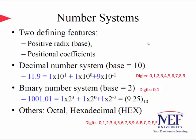If the base or radix is ten, the number system is called the decimal number system. There are ten different digits, zero to nine. In our example, we have eleven point nine, which is represented as one times ten to the one, plus one times ten to the zero, plus nine times ten to the minus one.